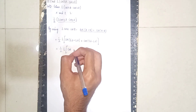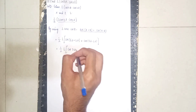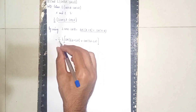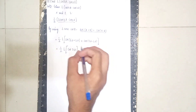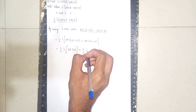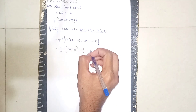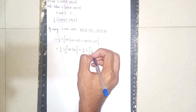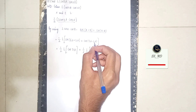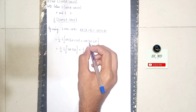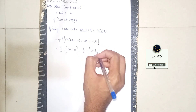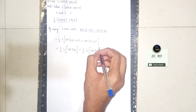So we get cos(7t) term. Then one-half is common for both. Plus one-half Laplace of cos(7t − 2t) — 7 minus 2 is 5... becoming cos(5t − 2t) = cos(3t).